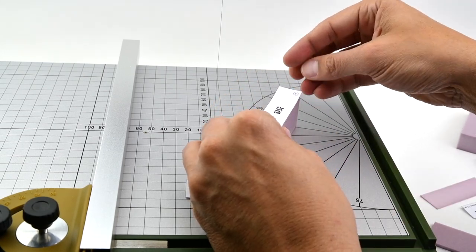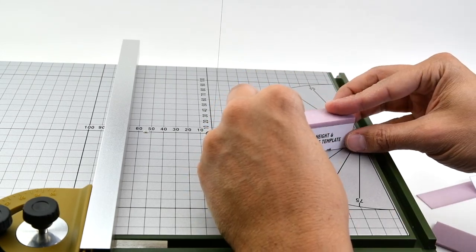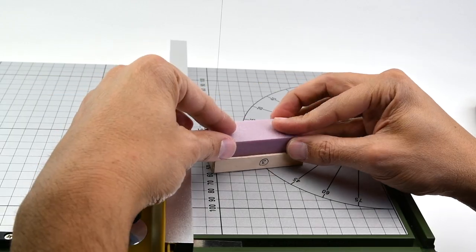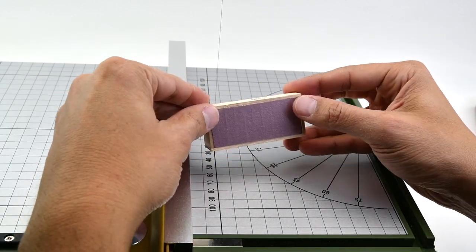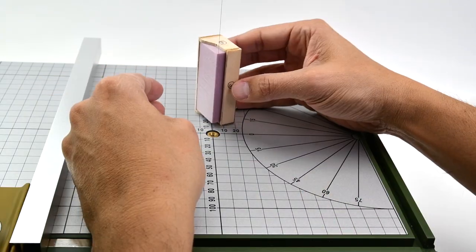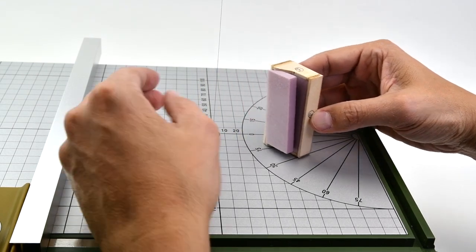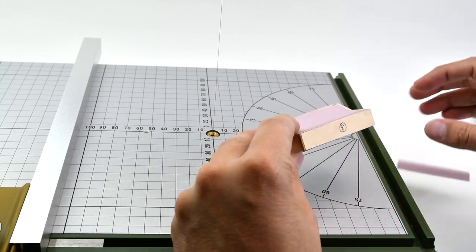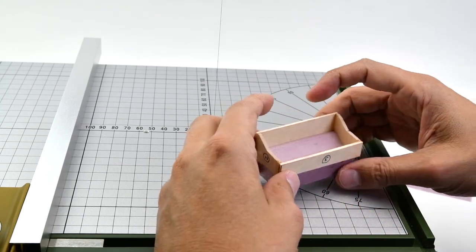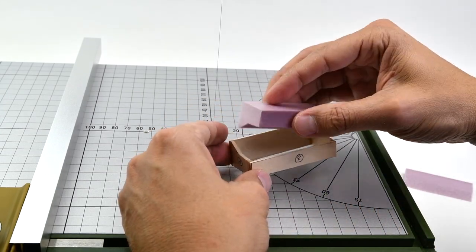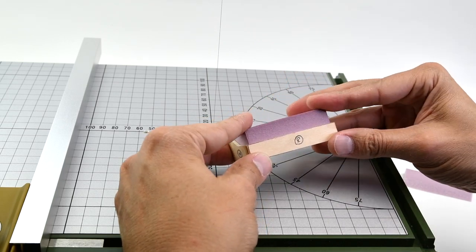With our foam block now ready and inserted into the balsa wood three-dimensional template, it's time to make the final cuts. Allowing the wire of the foam cutter to follow the angulated profile of the template. Each pass will create one profile. We will have to make two passes, one on each side of the foam block.